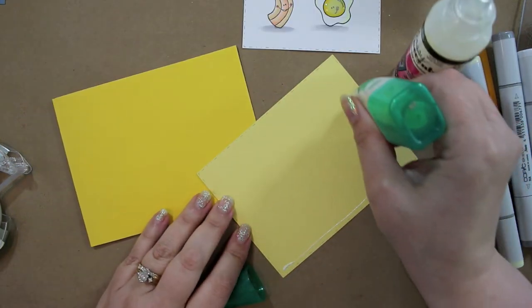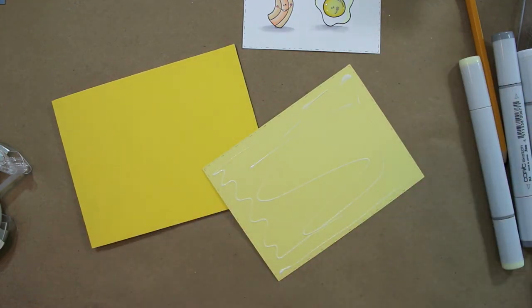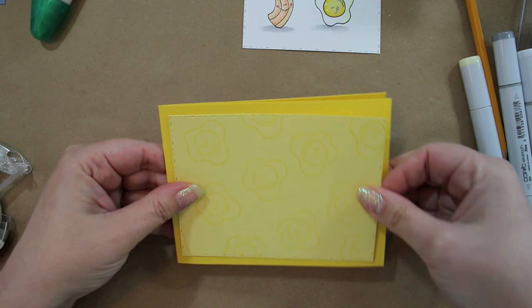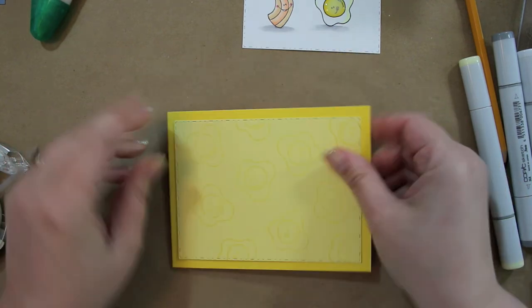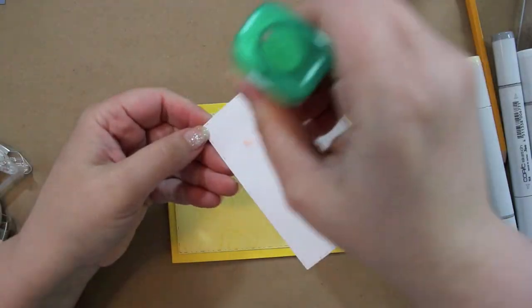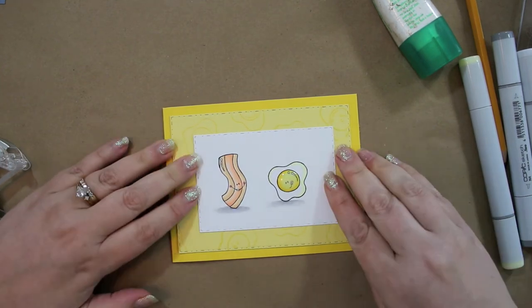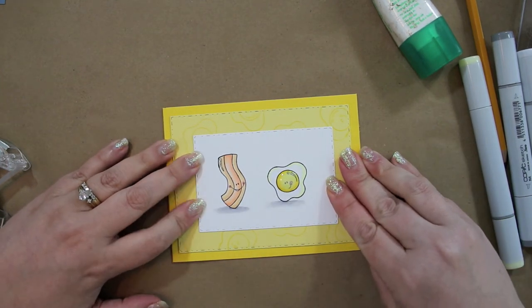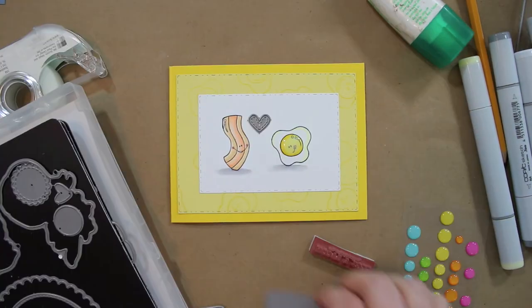I'm going to start assembling the card. I used mono multi liquid glue to glue down all the layers of the card. I had to be really careful when I did the part that had the images on it because the glossy accents was still wet, so I tried my best not to put my finger in it.